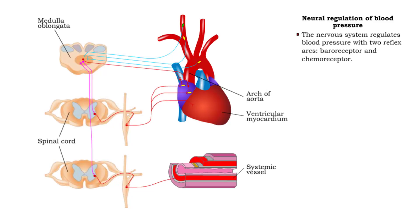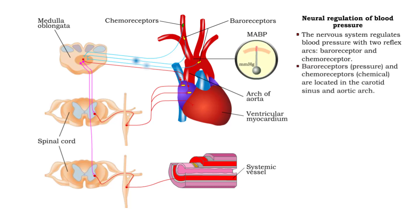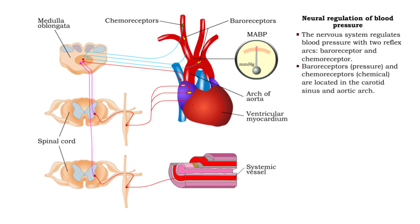The nervous system regulates blood pressure via negative feedback loops in two types of reflexes: baroreceptor and chemoreceptor. Baroreceptors monitor blood pressure; chemoreceptors monitor chemical composition. Both are located in the carotid sinus and arch of the aorta.